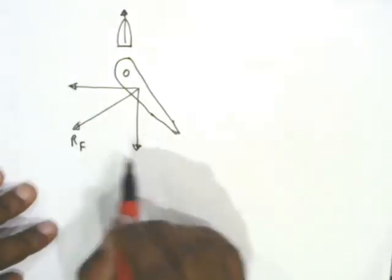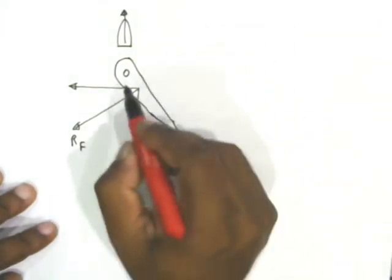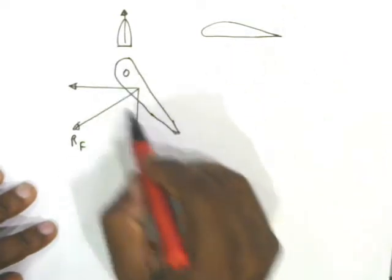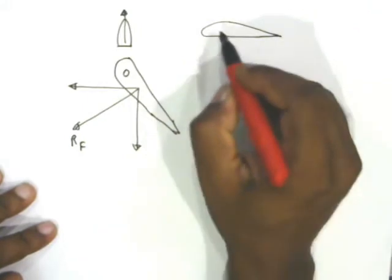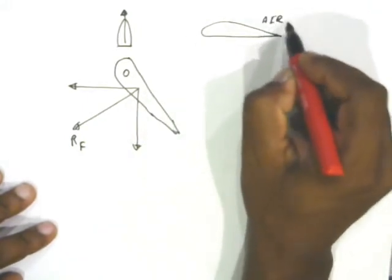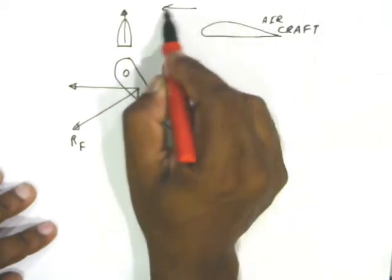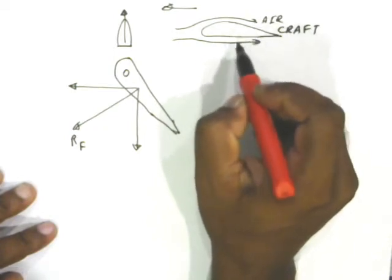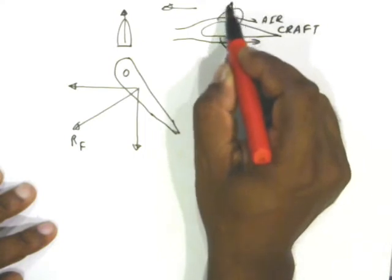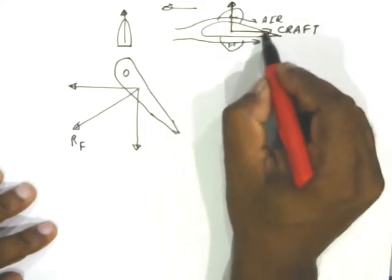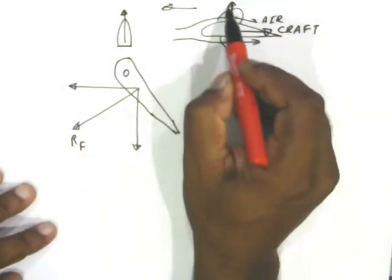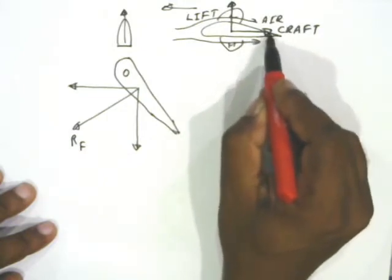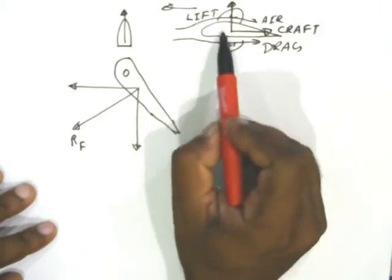Before we name these two components, we will go to the aircraft industry. If you look at the cross-section of this rudder, it looks like an aircraft wing. The aircraft wing has a similar shape. When the aircraft is moving in one direction, there is a flow of air, and high pressure and low pressure are created. There is a force getting created upwards and another force in the direction against motion. The upward force is called the lift of the wing.